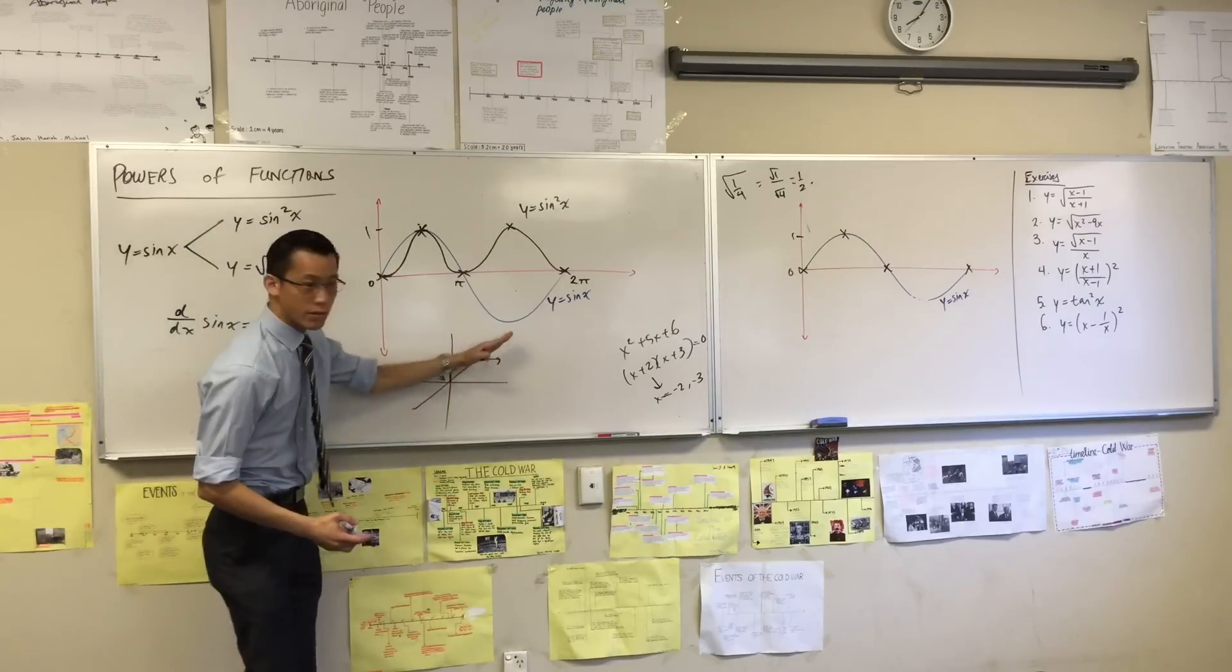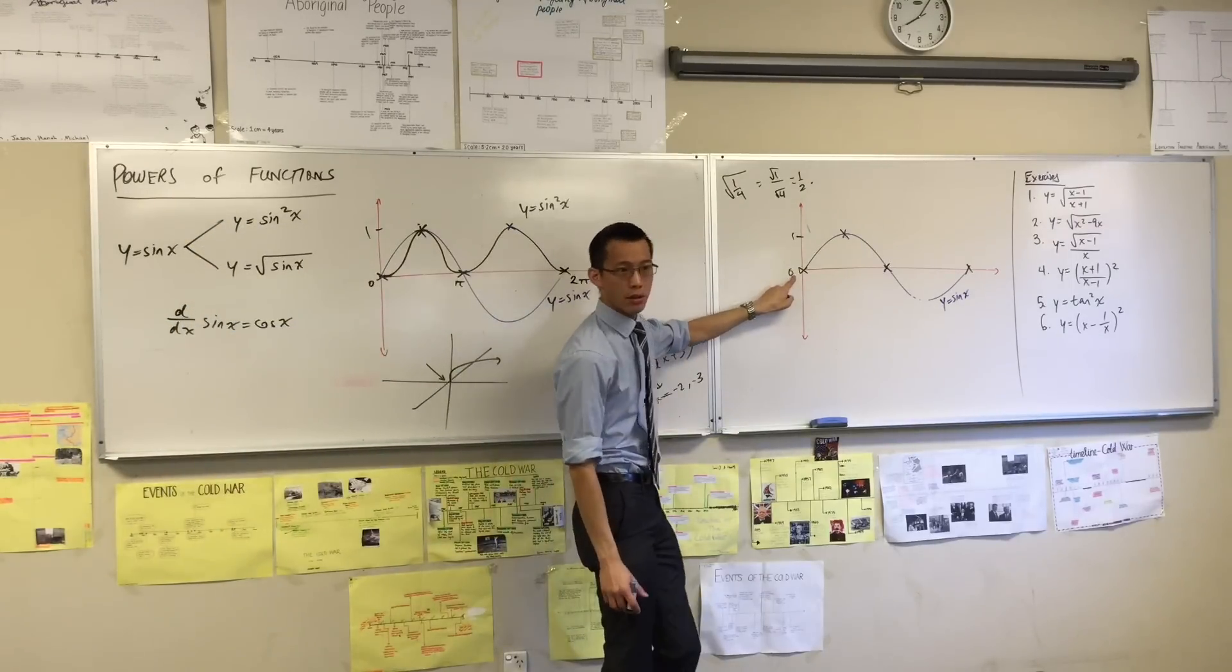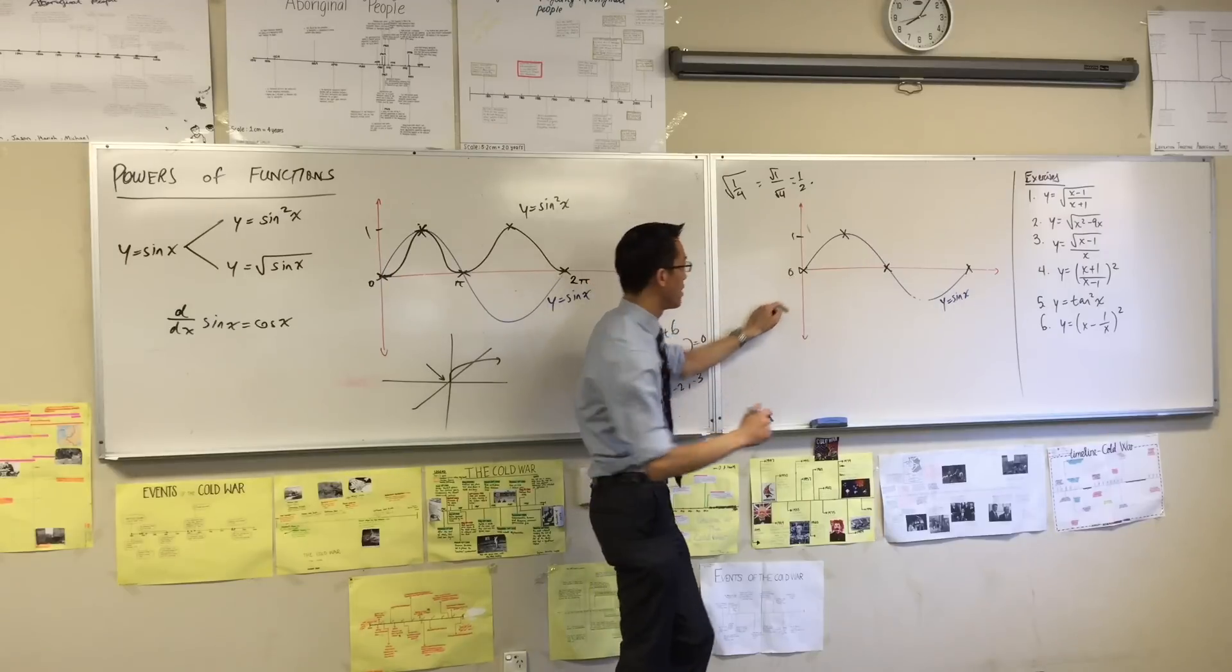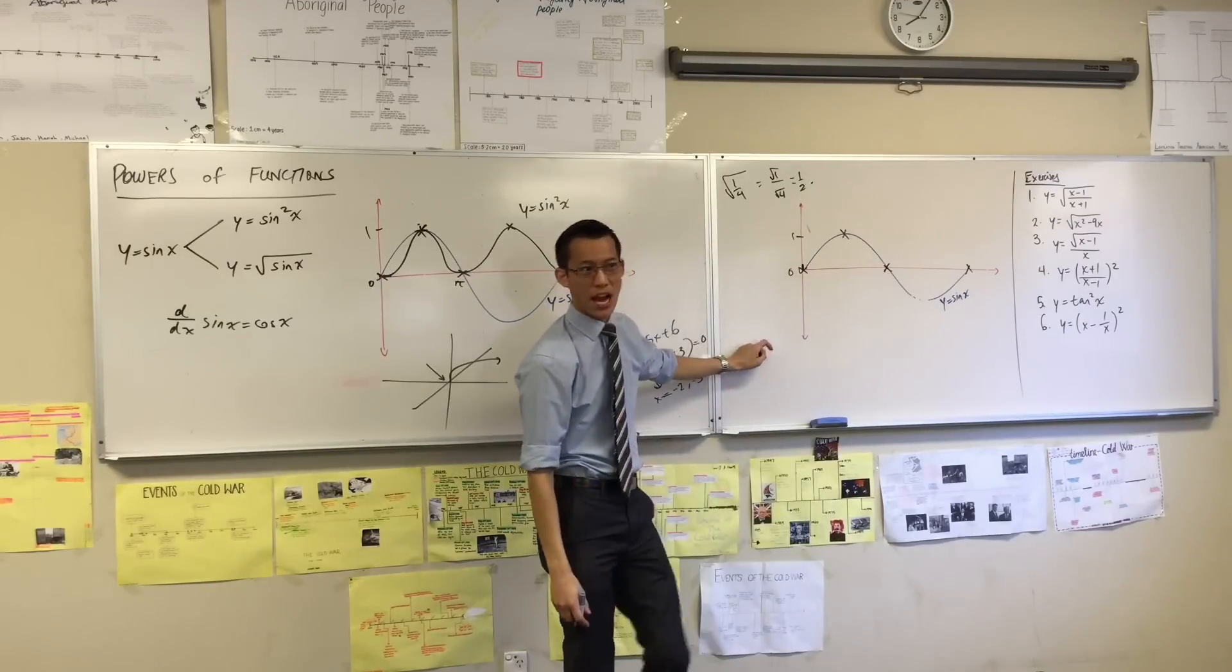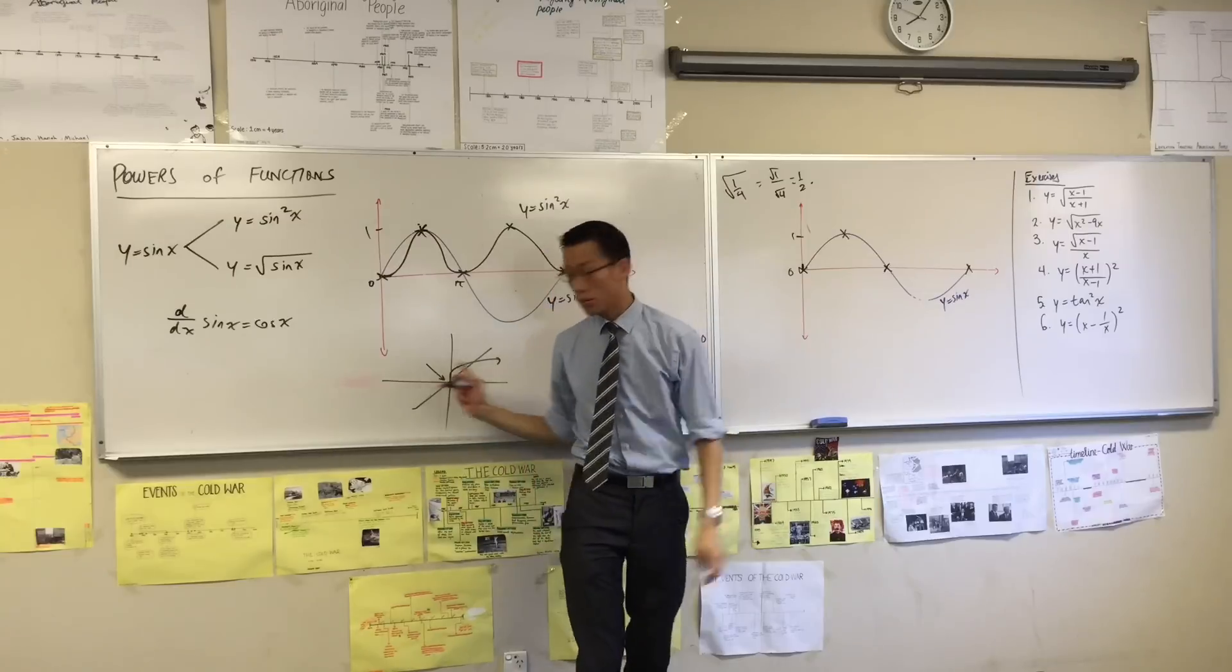The gradient here is 1. The gradient here is also 1, okay? So in fact, you're going to get the same vertical kind of tangent there that you've got over here, okay?